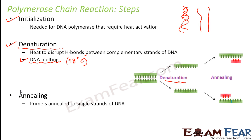The next step is annealing. In annealing, the primers are annealed to the single strands of DNA. You now have two single strands of DNA. The primers — small oligonucleotides that are complementary to the existing strand — bind to their complementary part of the strand. As you can see, these red structures are the primers. The primers are always towards the 3' end, so they attach to their complementary bases on each strand. Annealing means to join, while denaturation means to break.